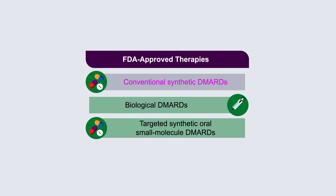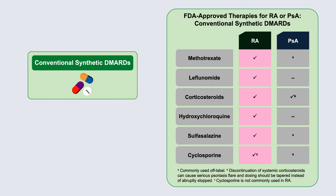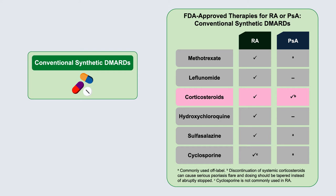Now let's talk about therapies, starting with conventional synthetic DMARDs. Virtually all of these are FDA-approved for rheumatoid arthritis, but not so much for psoriatic arthritis. Even methotrexate, which is the gateway drug before using biologics and is required by most third-party carriers, is not approved and used off-label for PSA. Certain drugs like cyclosporine are used very infrequently. Hydroxychloroquine is an RA drug, not a PSA drug, and may actually have some toxicities. Glucocorticoids have a very minimal role in the treatment of psoriasis and psoriatic arthritis.